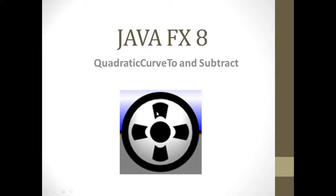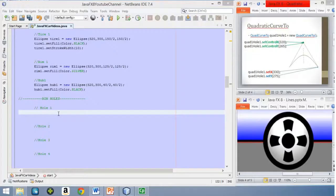We're going to give more detail to the wheels of our car. We're going to focus on creating these holes here, and we're going to use these two elements — the QuadraticCurve2 path element and the subtract operation — to accomplish that. So let's start.